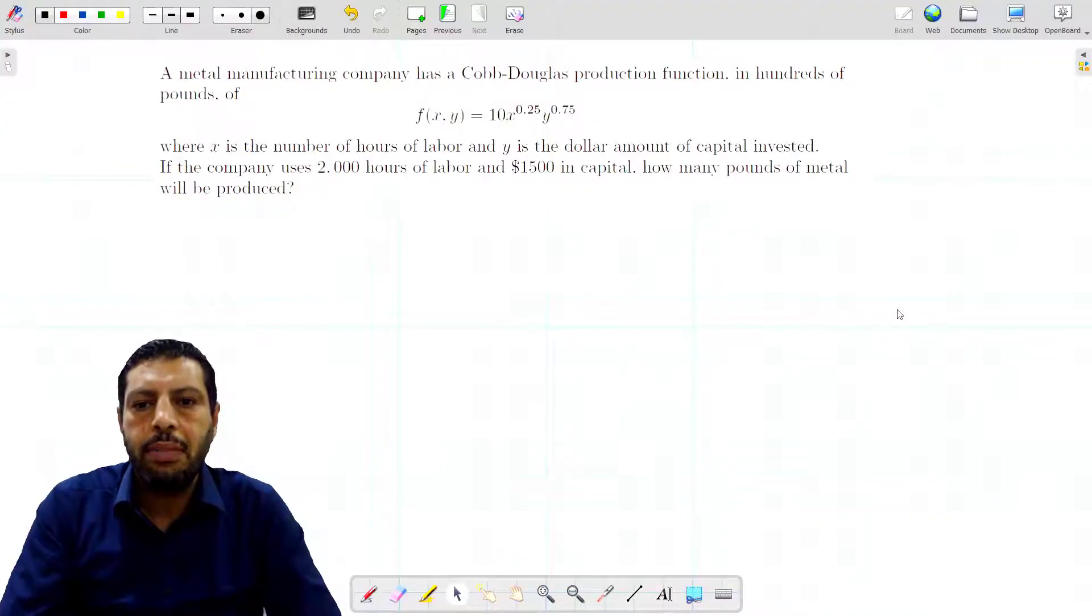Welcome to this new activity which is about multivariable calculus. Here we have a model which represents the production of a manufacturing company. We have a metal manufacturing company which has this production function in hundreds of pounds.